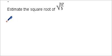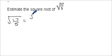So you remember that the square root of a fraction is the same as the square root of the numerator divided by the square root of the denominator. So let's think of some perfect squares that this is close to.